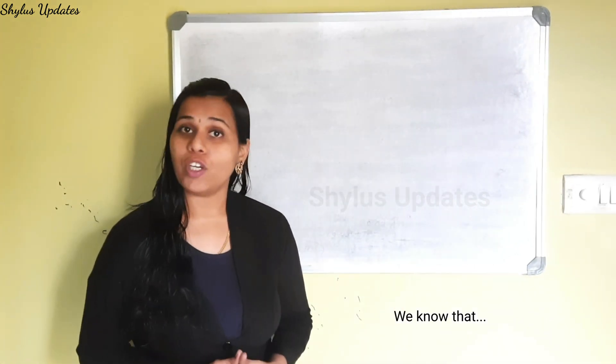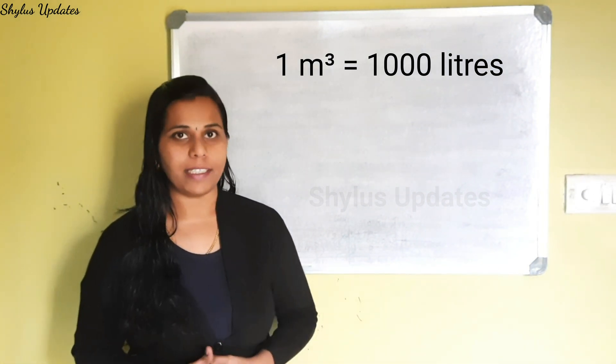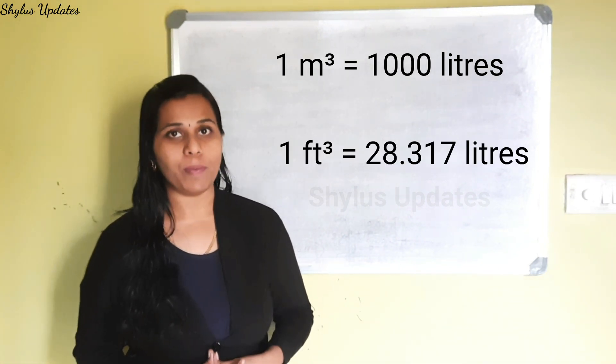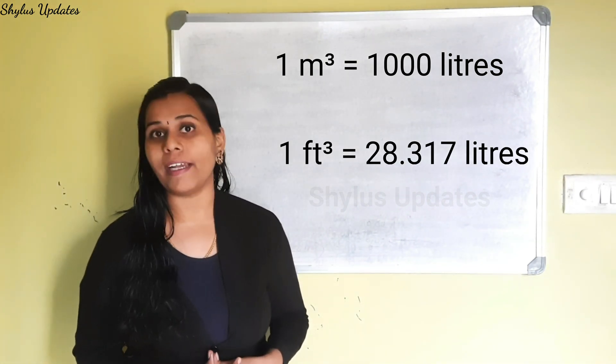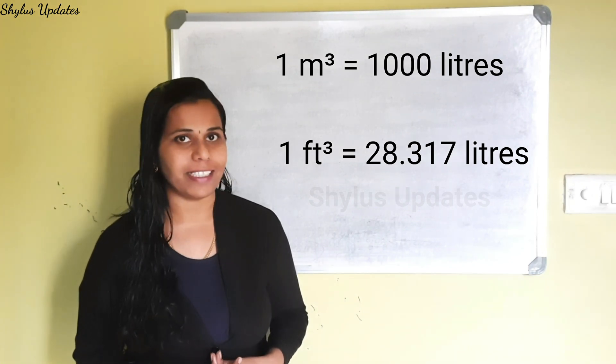We know that 1 meter cube is equal to 1000 liters, and 1 feet cube is equal to 28.317 liters.